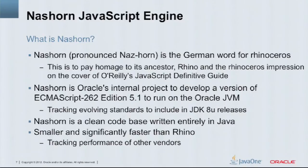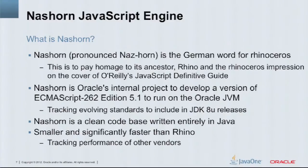NASHORN is the internal project that was started about two years ago — actually in October — to develop an ECMAScript-compliant version of the language to run on the JVM. It started out as an experiment to see how hard it would actually be to implement JavaScript from scratch, and it took hold. The group has gotten a little bit larger in the last two years. We're following edition 5.1 of the ECMAScript standard, but we're also tracking evolving changes in standards, so as new standards come out we'll be updating NASHORN.